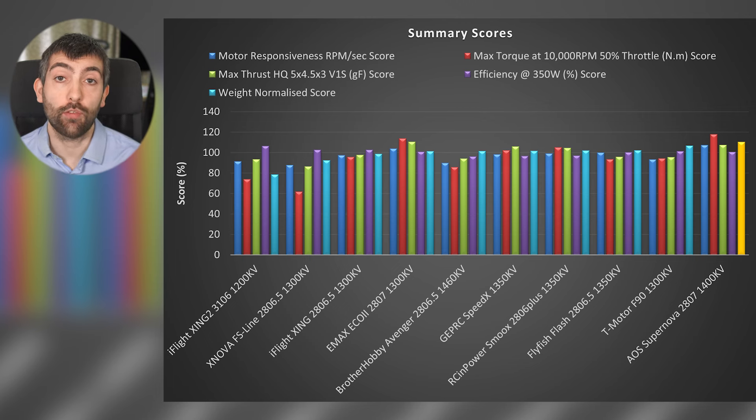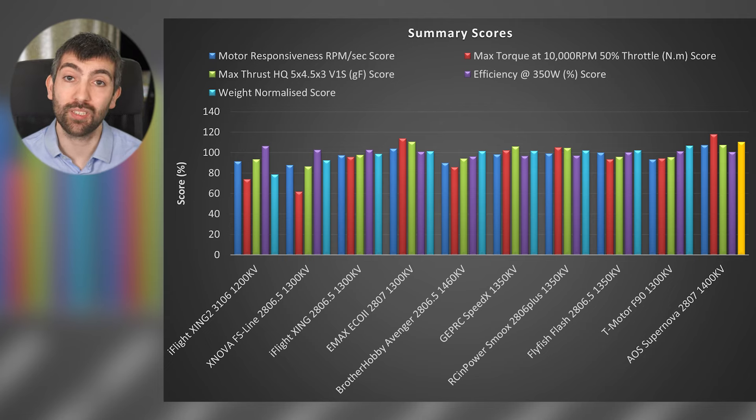And what we can see is the Supernova 2807 has the best total score, so it's the best performing motor overall, and it also has the best weight-normalized score. And I think this shows we found the right balance of performance and weight for this motor across all of the test parameters.